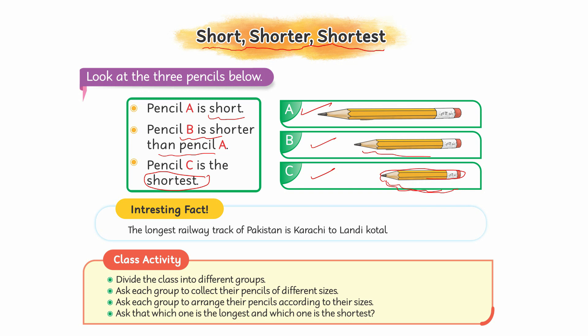तो पहारे बच्चों, आपने अब क्या करना है — एक गرम activity करनी है। आपने कुछ तीन objects लेने हैं जिन्हें आप Short, Shorter, और Shortest कह सकें। ठीक है, अब ये interesting fact देखें।